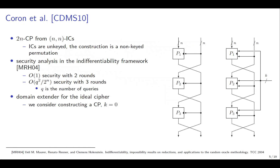They also considered the more general case of a domain extender for the ideal cipher, where the construction takes a K-bit key as input used as part of the input in ideal ciphers. The construction is a keyed permutation, but in this work we focus on constructing a cryptographic permutation, so we consider the case where K equals zero.